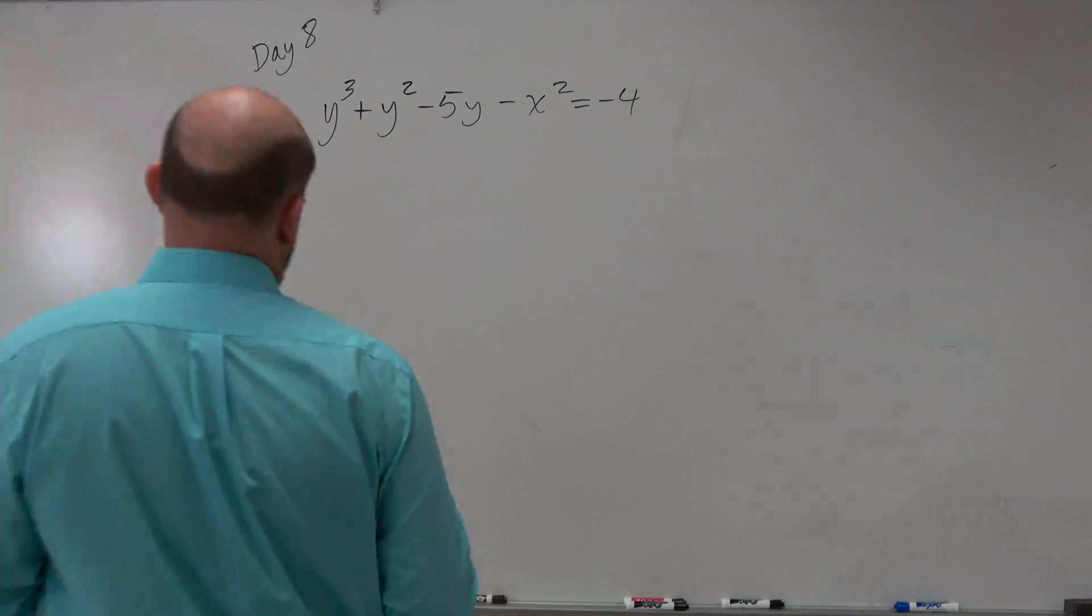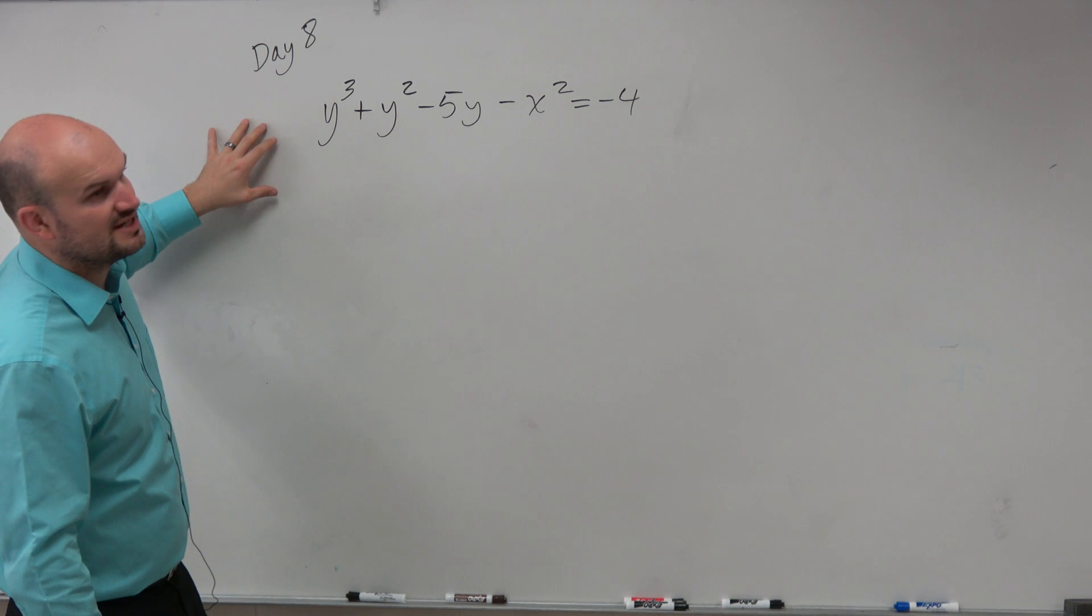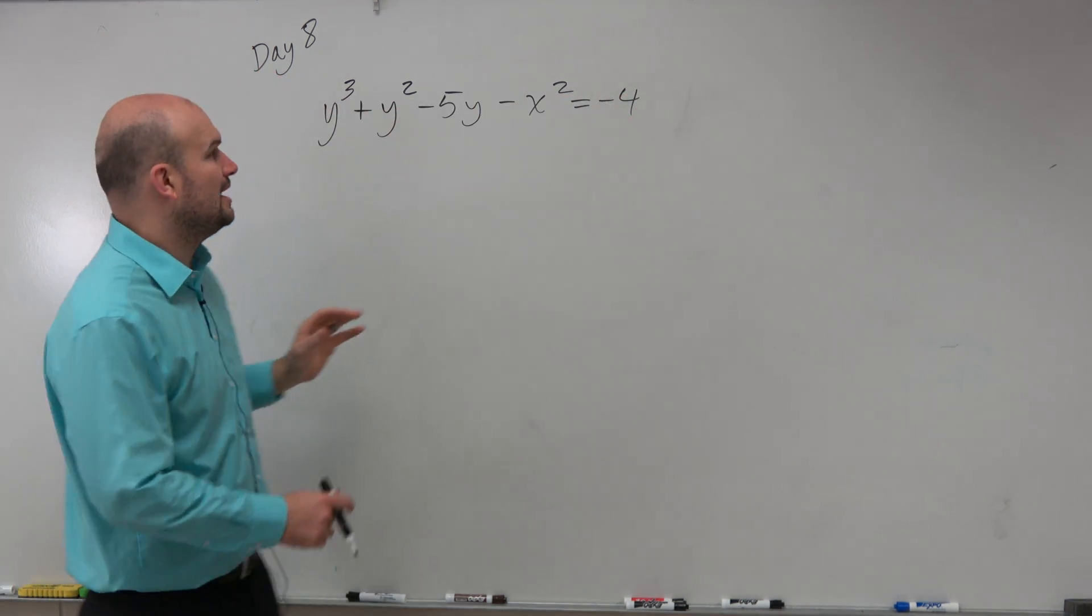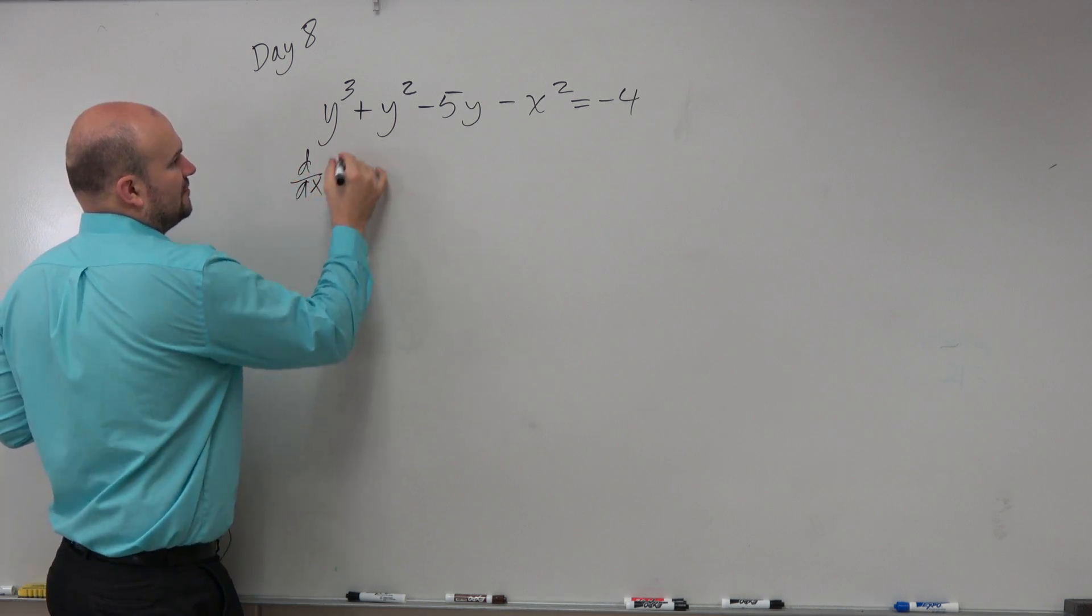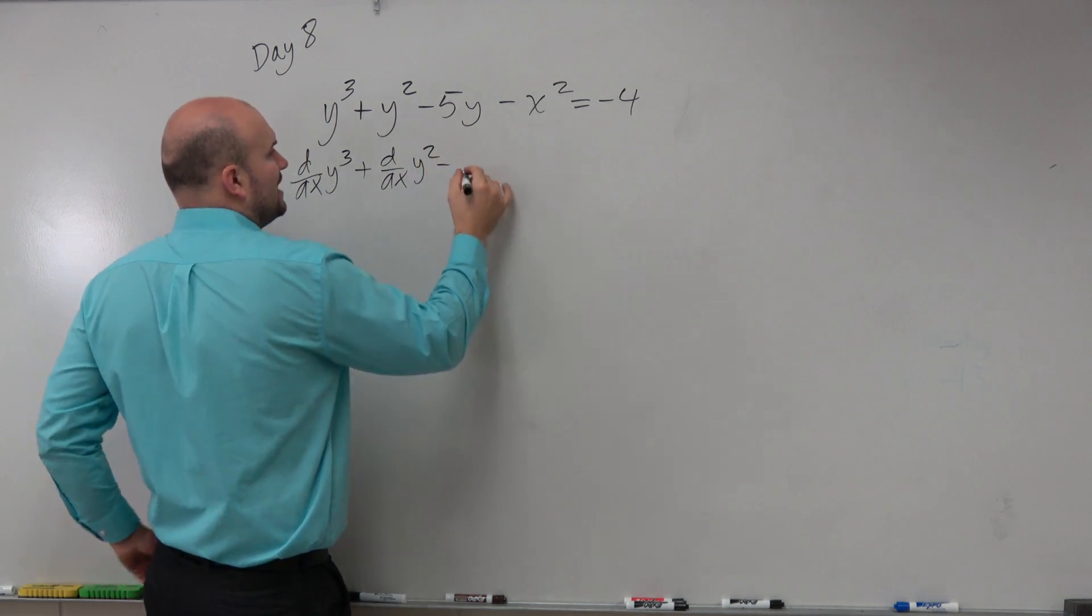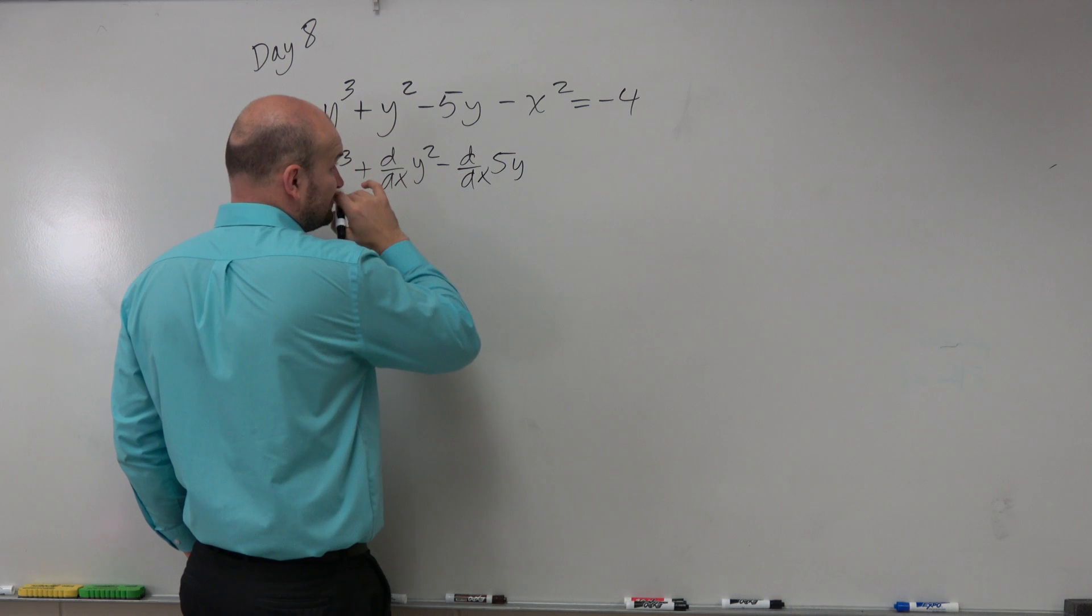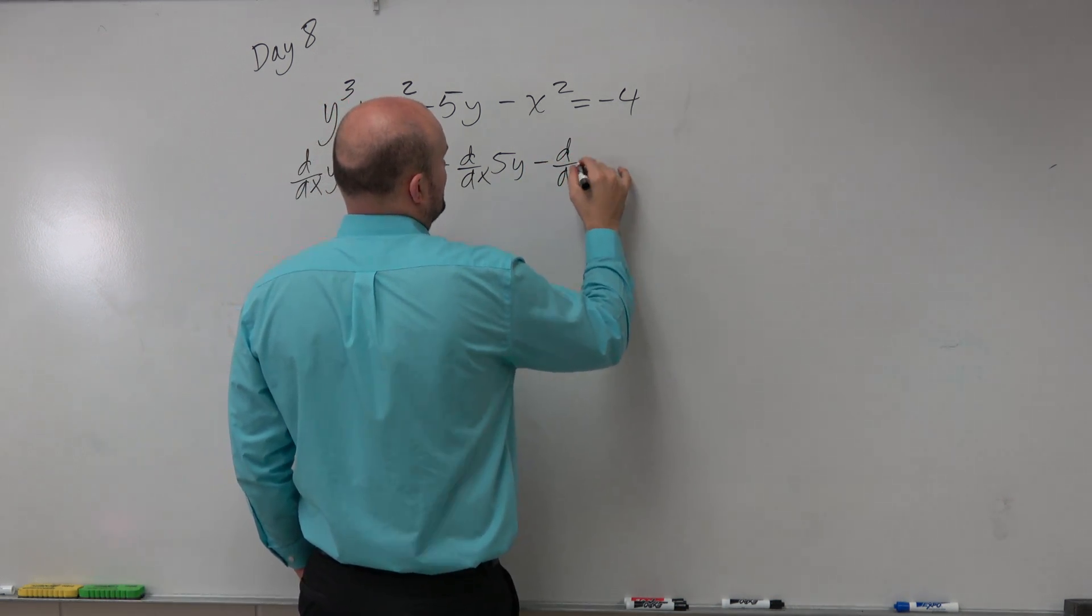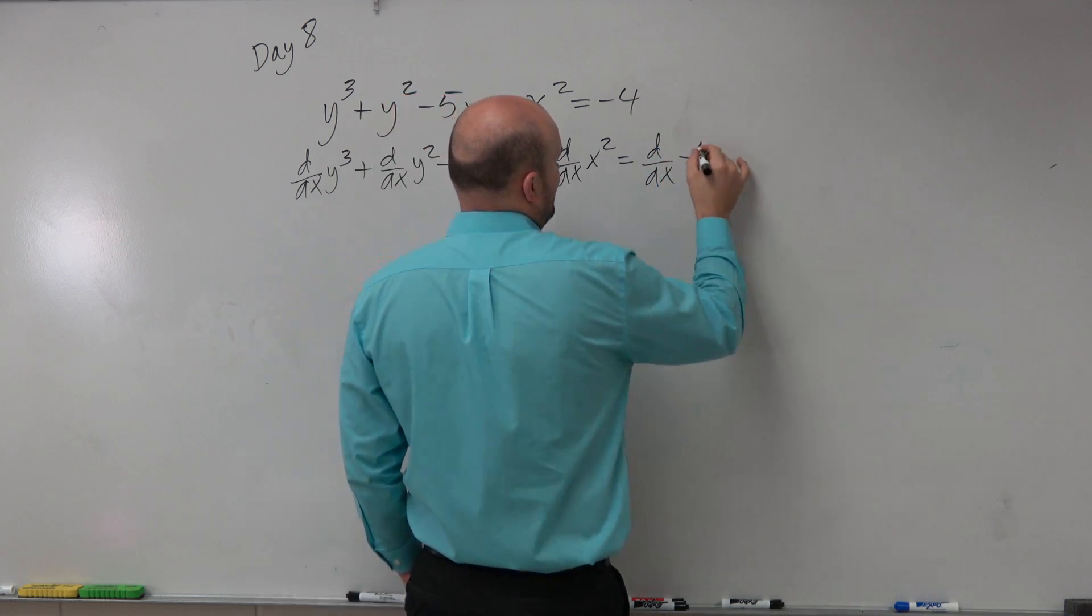What we're going to do is differentiate everything with respect to x. So rather than taking a step and saying I'm going to do d over dx on both sides and then distribute, I'm just going to write out d over dx of y cubed plus d over dx of y squared minus d over dx of 5y minus d over dx of x squared equals d over dx of negative 4.